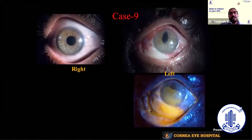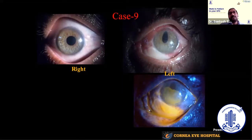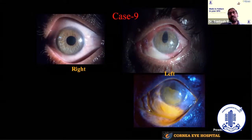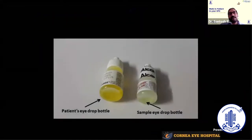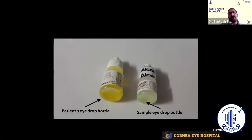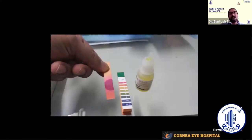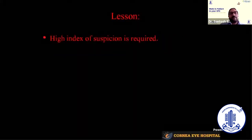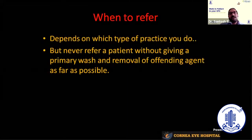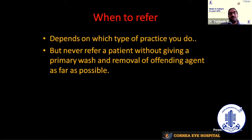The last case: a patient presenting after cataract surgery with a burning sensation when using eye drops in the left eye, with the eye picture classically looking like an acid burn. On examination, the bottle of Vigamox being used had a more yellowish color compared to a sample bottle. We checked the pH and it turned out to be very acidic — the drop had probably been mixed with acid. The lesson is a high index of suspicion is required. For referral: Grade 1 and 2 can be handled by all comprehensive ophthalmologists; Grade 3 and above depends on your practice setting. But always perform a primary wash and remove the offending agent before referring.